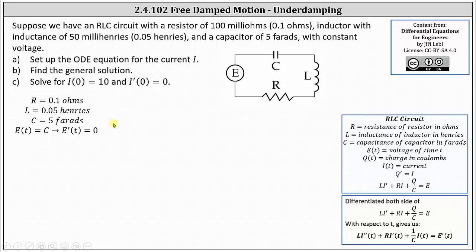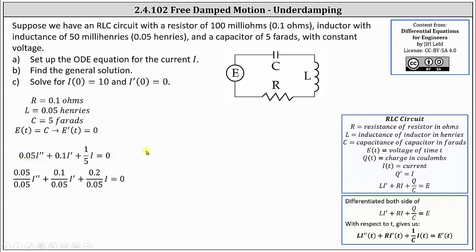Performing substitution into the differential equation, we have 0.05 I'' plus 0.1 I' plus one-fifth I equals zero. Dividing through by 0.05 and simplifying, Part A: the ODE equation is I'' plus 2I' plus 4I equals zero.